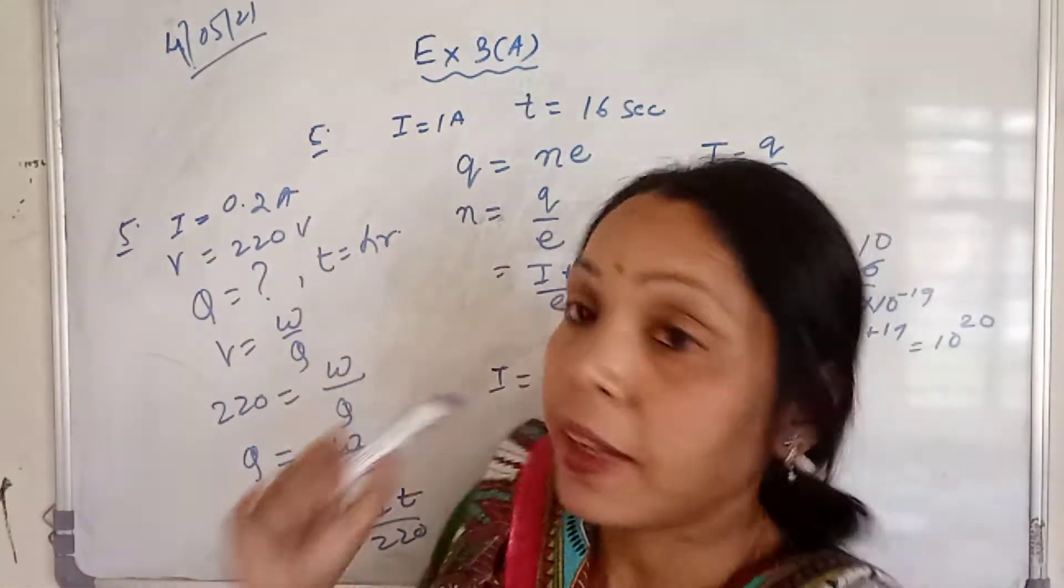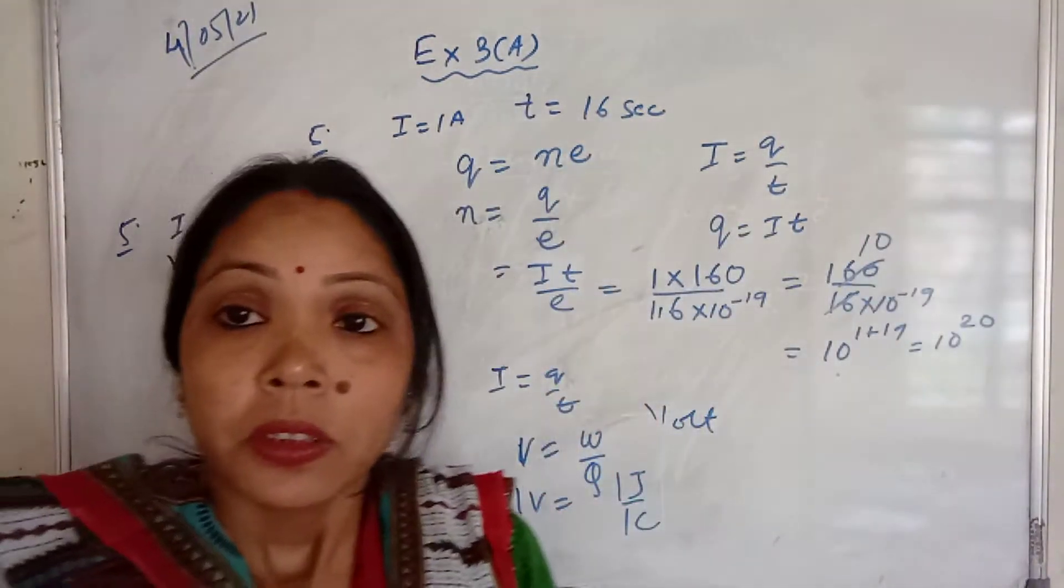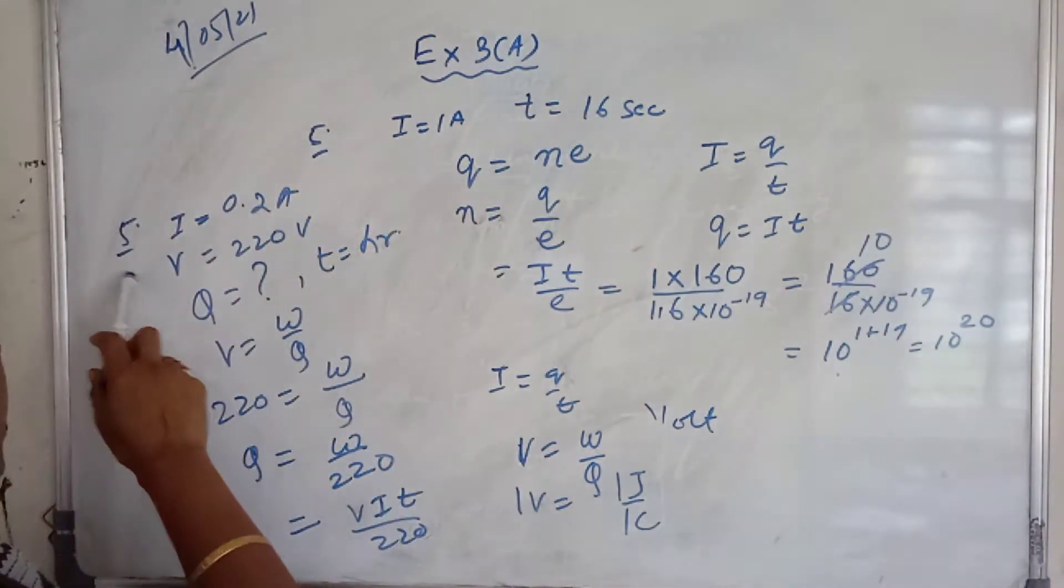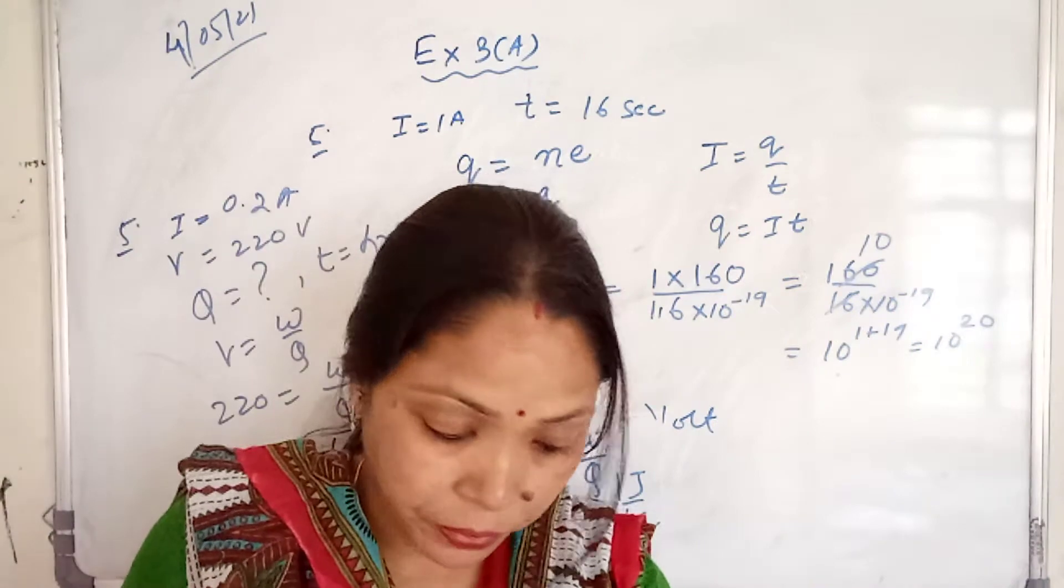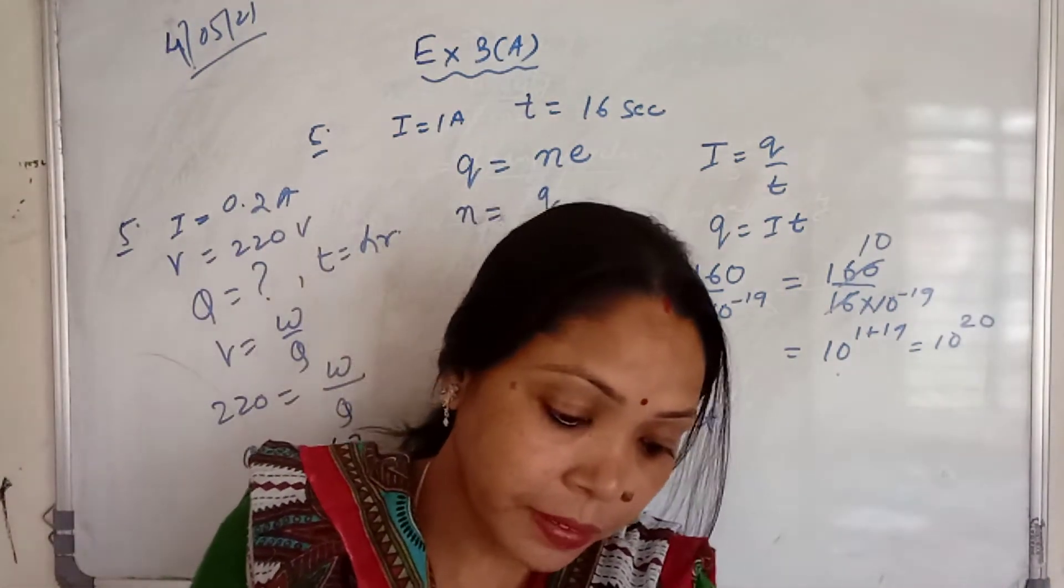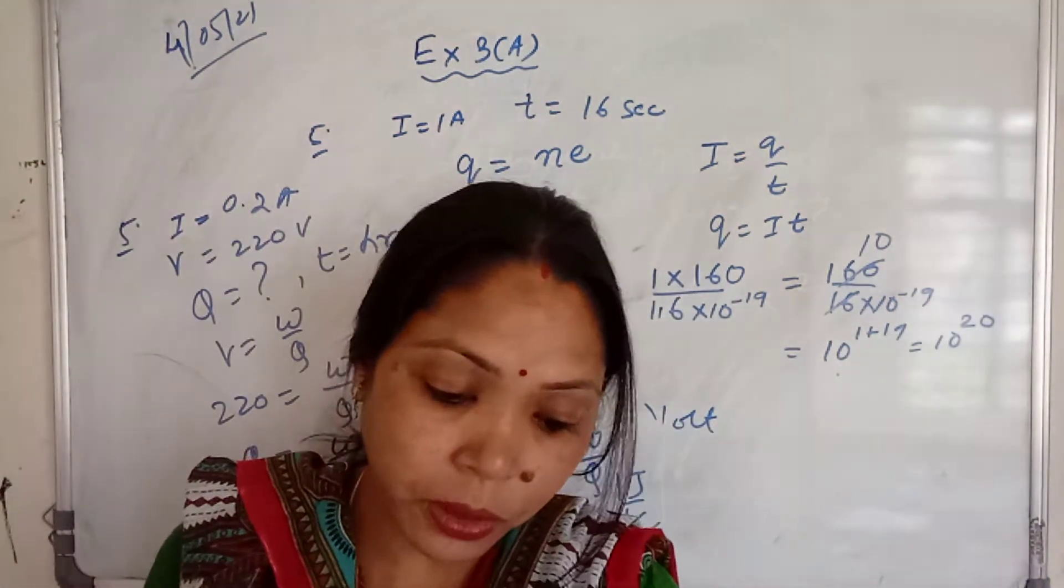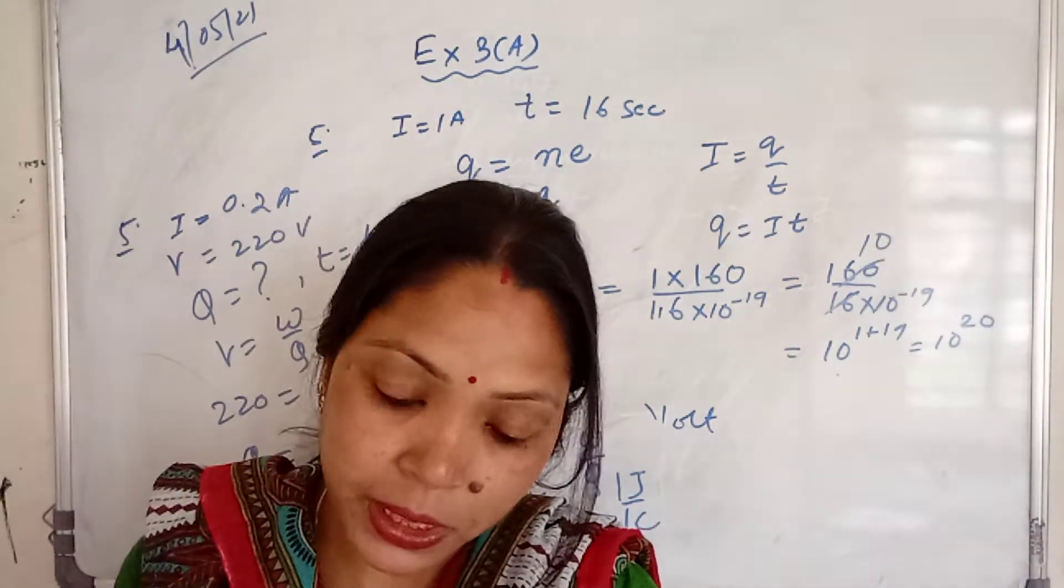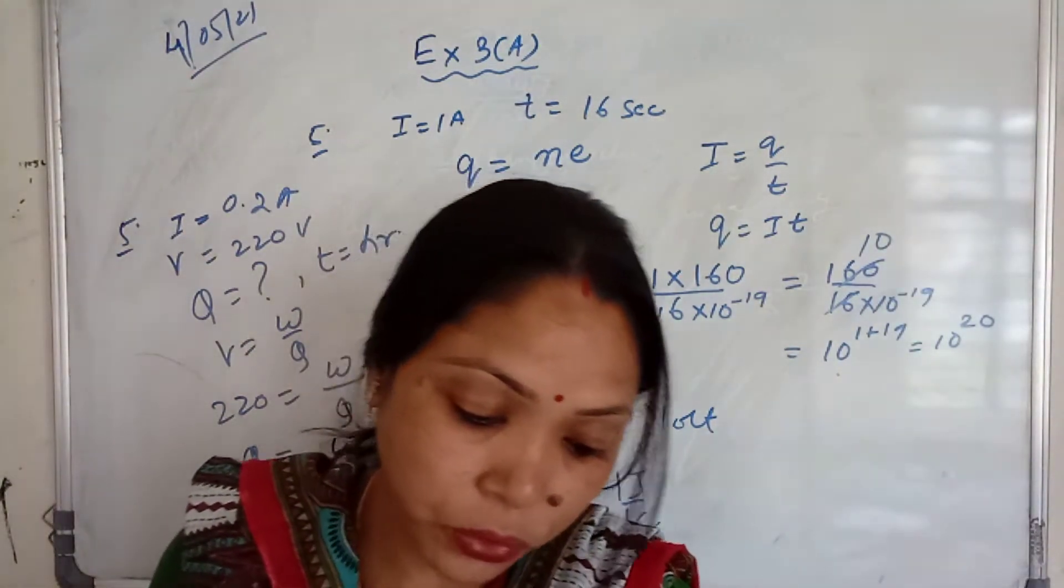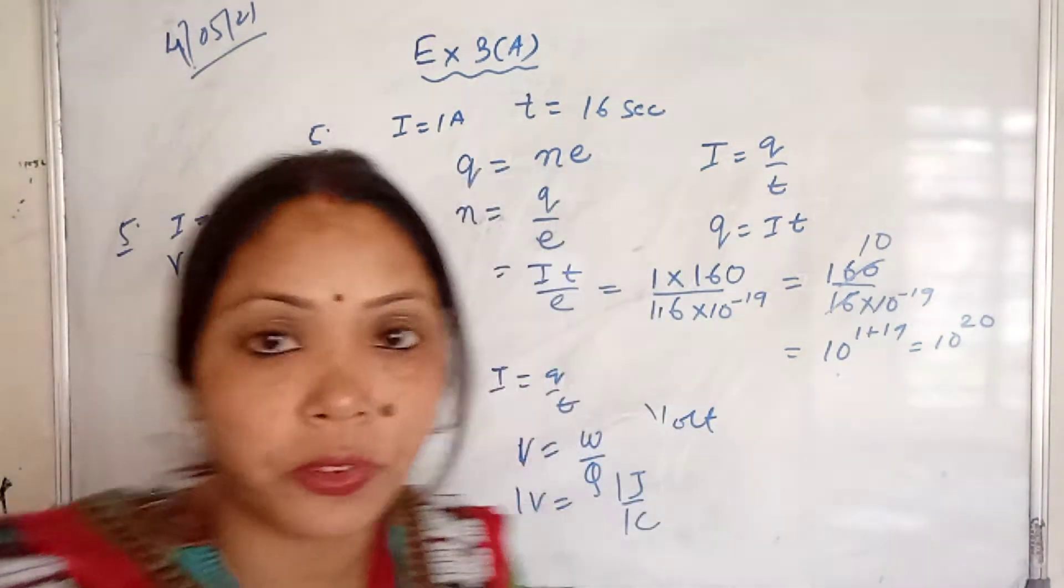We are discussing exercise 3A, question number 5, the numerical part which we discussed in the previous video. An electric bulb draws a current of 0.2 ampere when the voltage is 220 volts. Calculate the amount of electric charge flowing through it in one hour.